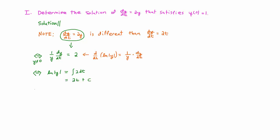Since y is inside of the natural logarithm, we can exponentiate both sides to get that the absolute value of y equals e to the 2t plus c.